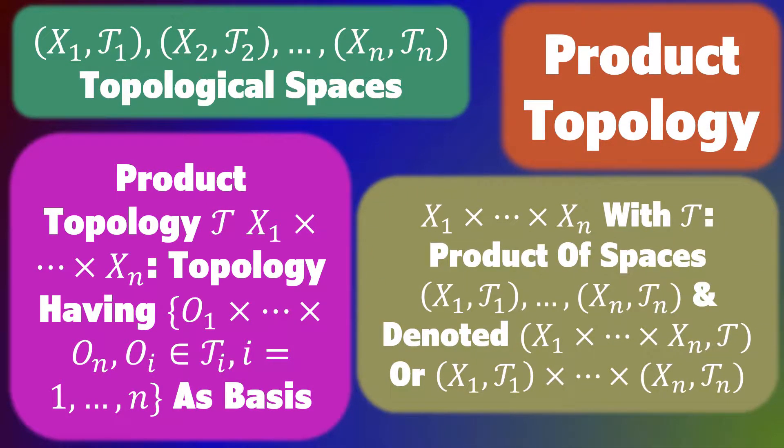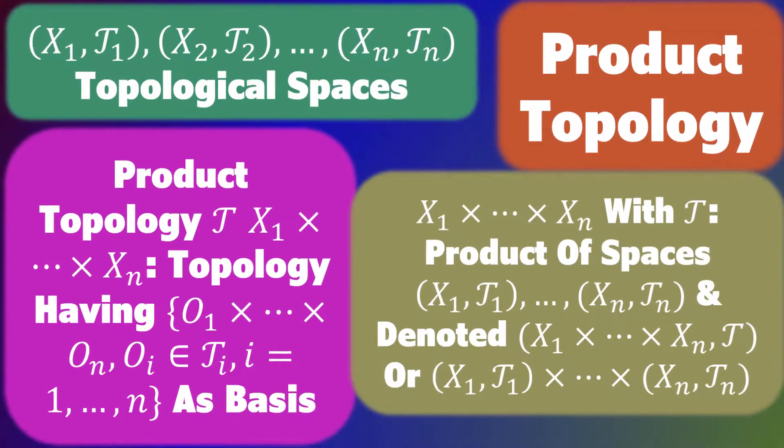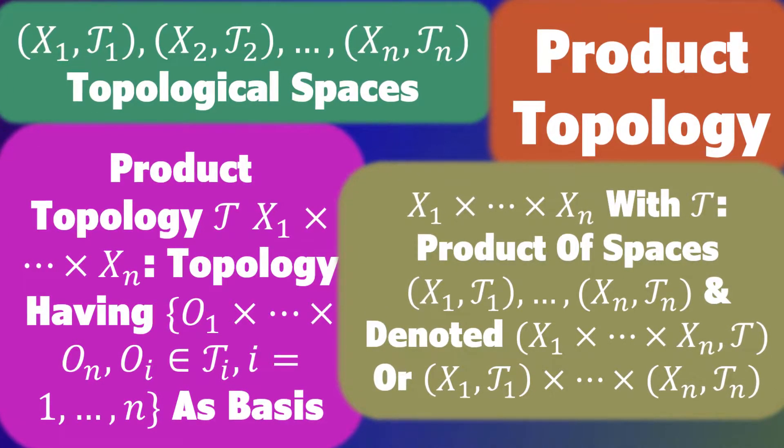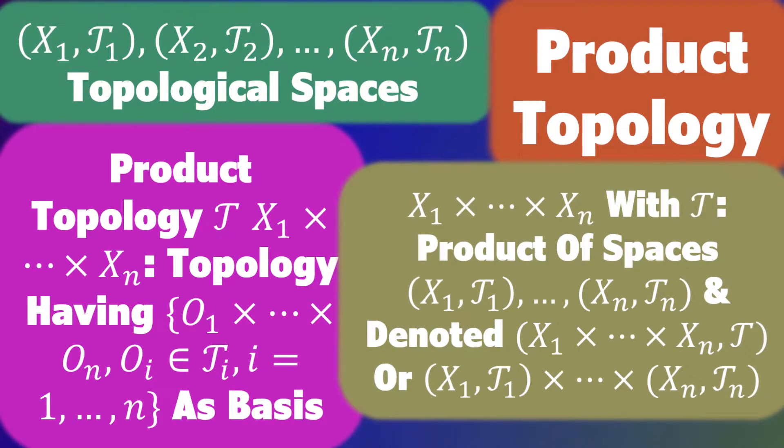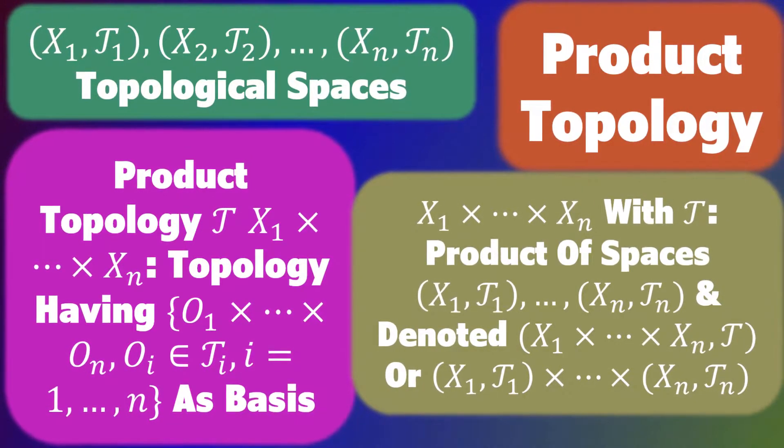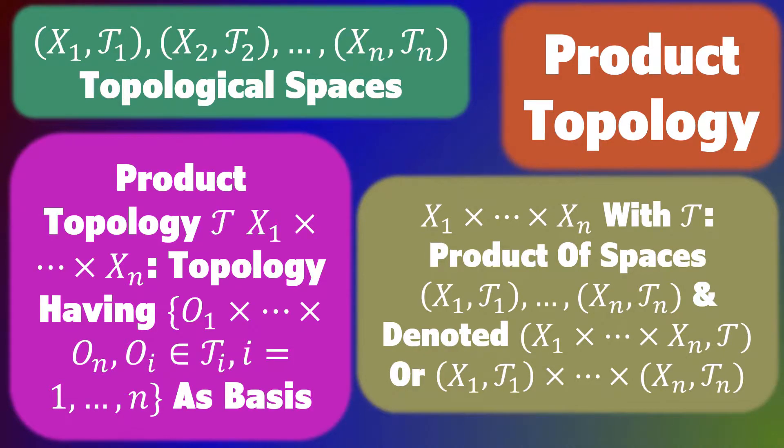The set X₁ times all the way up to Xₙ with topology T is said to be the product of the spaces (X₁, T₁) all the way up to (Xₙ, Tₙ) and is denoted by X₁ × ... × Xₙ with T, or (X₁, T₁) × ... × (Xₙ, Tₙ).